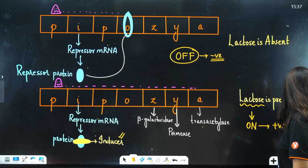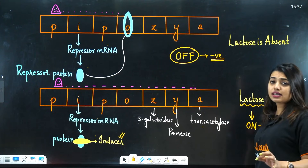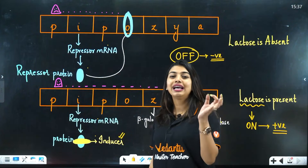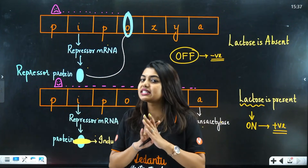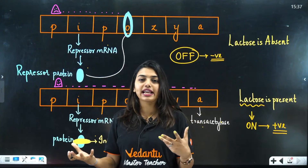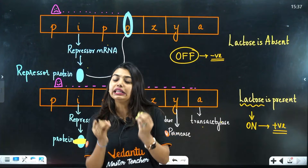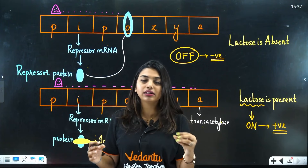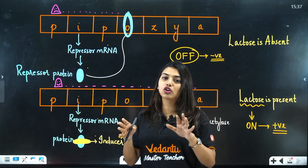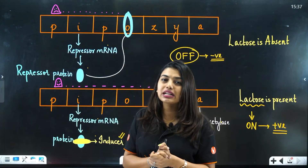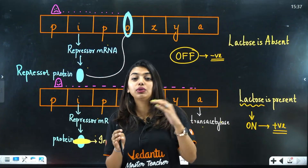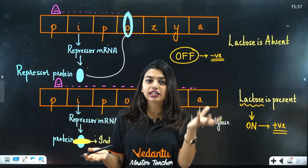When lactose is present, the gene is switched on — this is positive regulation. But how did lactose enter to act as an inducer in the first place? This is a leaky model — lactose entered through some way that Jacob and Monod could not fully explain, and it is not described in the textbook either. Later, more lactose is absorbed through permease.